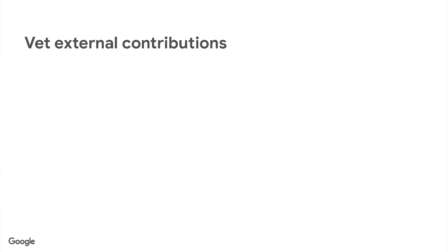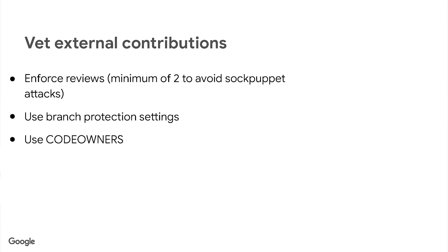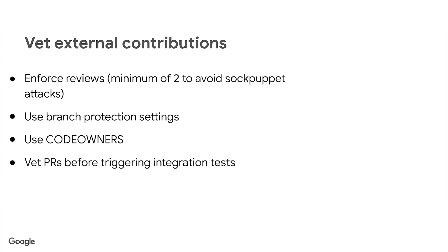If you accept contributions from various contributors, use two-person review enforced through GitHub's branch protection settings to protect against sabotage from someone internal to the project and to increase the likelihood that unintentional vulnerabilities will be caught before being merged. In a SOC puppet attack, a maintainer uses a personal account to send a PR and approve it themselves, bypassing code review. Use code owners for different parts of the code, especially sensitive areas like workflows — it reduces work for maintainers, which leads to better reviews. Vet PRs before integration tests are triggered, and review the usage of auto-merge since this gives users the ability to push code directly to a repo.